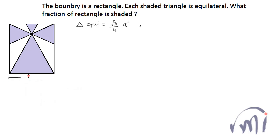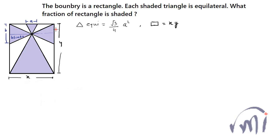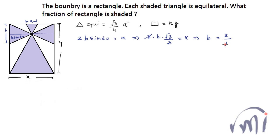We assume this length as x and this length as y, so the area of the rectangle is x·y. Now let us assume this side as a and this side as b. The height of this triangle will be b·sin60, and the other triangle's height is also b·sin60 because these two triangles are congruent. So 2·b·sin60 = x, or 2·b·(√3/2) = x, giving b = x/√3.